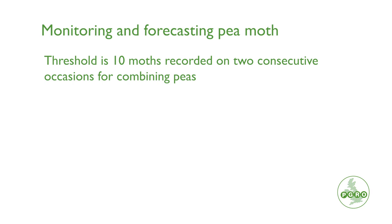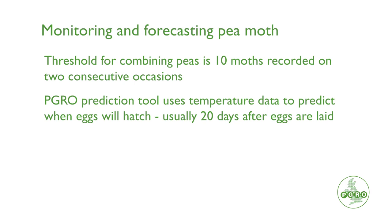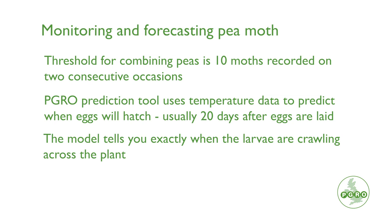The threshold for this pest in combining peas is 10 moths caught in your trap on two consecutive occasions. When you reach that threshold, you should go to the PGRO website where we put information from a prediction tool that we use. The model uses temperature data to predict when those eggs will hatch — usually 10 to 20 days after eggs are laid. The model is very precise and we strongly recommend that any pea growers use this model. Rather than just applying an insecticide at first pod stage, it tells you exactly when the larvae are crawling across the plant. If you were to just apply an insecticide at first pod stage, there's a chance that you might miss the peak period of activity. So this is a good system, well worth using for peas.